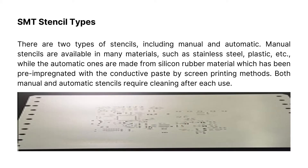There are two types of stencils: manual and automatic. Manual stencils are available in many materials, such as stainless steel and plastic, while the automatic ones are made from silicon rubber material which has been pre-impregnated with conductive paste by screen printing methods. Both manual and automatic stencils require cleaning after each use.